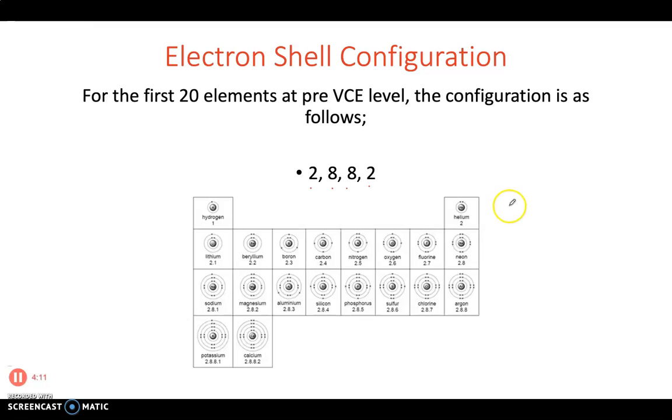So the electrons like to arrange themselves as 2-8-8-2 and I've got here an image of what that looks like for each element all the way up to the 20th element, calcium, which has 20 protons within its nucleus and 20 electrons that go around it. But the pattern that we will be following is 2-8-8-2, the structure of electrons around the atom. Please note down this slide as well into your study notes.